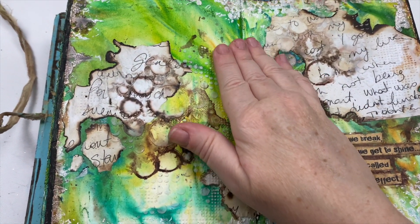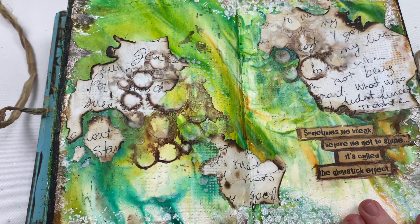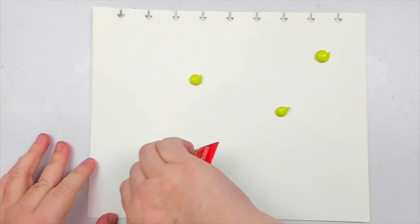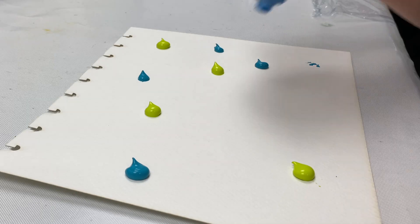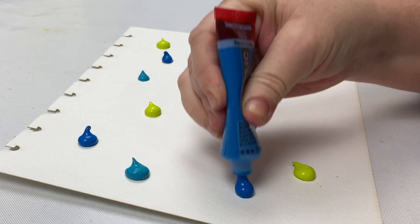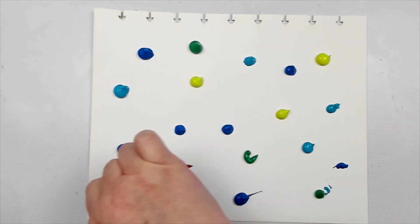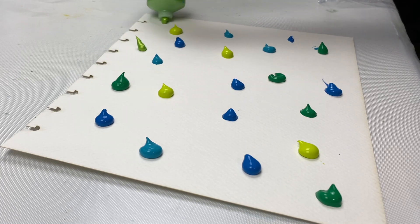For my second technique, I'm just using some heavy body acrylic paint. Doesn't have to be too thick, but you don't want it to be so liquidy. I'm adding a few different colors, of course my favorite ones, which are blues and greens. And you're going to see this amazing background which is so easy to make with just a simple household item.